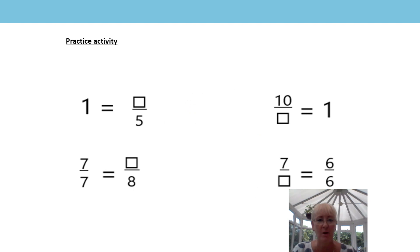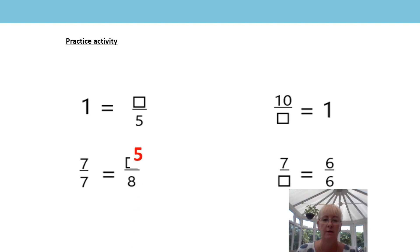Let's see how you got on with the practice questions from last time. We've got some questions with missing numerators and missing denominators. The first one: one is equal to how many fifths? Five fifths — well done if you got that right. And the next one: ten and we've got a missing denominator, equivalent to one. Ten tenths is equivalent to one.